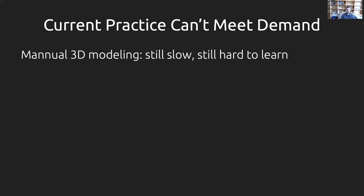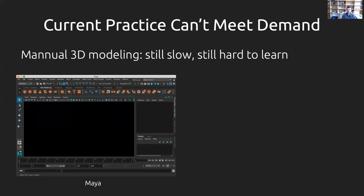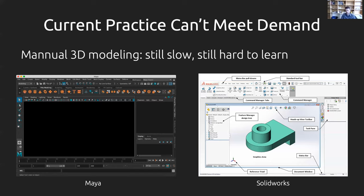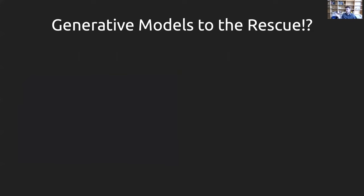The big problem is that current practices in 3D modeling really can't meet the demands of today's and tomorrow's applications. So many decades into computer graphics as a field, 3D modeling is still done through manual, tedious processes — it's slow and hard to learn. If you've suffered through Maya, Blender, or SolidWorks, you can commiserate: these interfaces are hideously complex, very idiosyncratic, with a lot of details to figure out. Maybe generative models can come to our rescue.